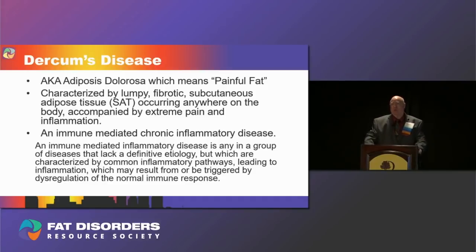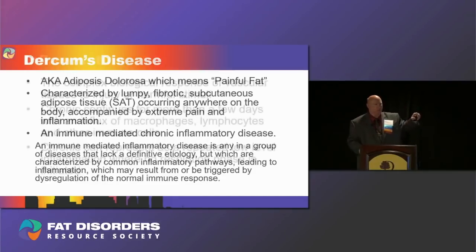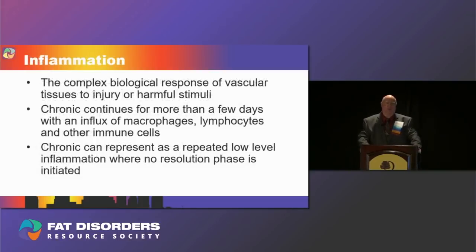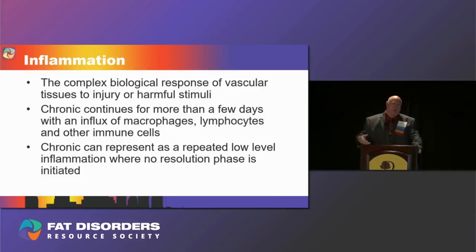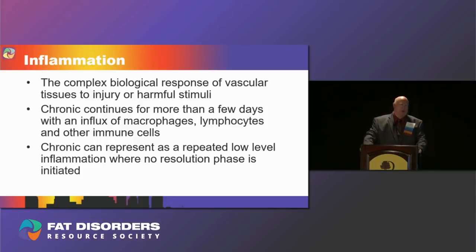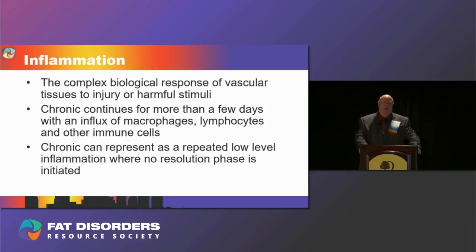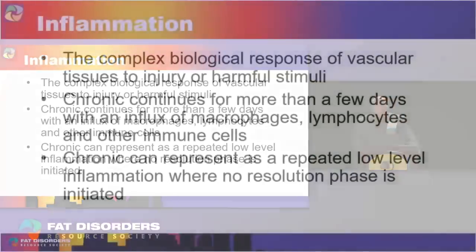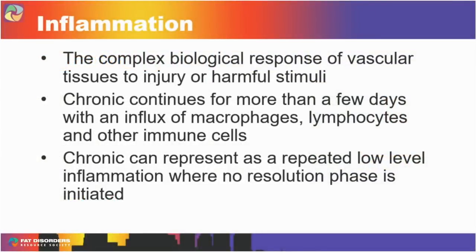These pathways can result from or be triggered by a dysregulation of the normal immune response. Inflammation is a complex biological response of vascular tissues to injury or harmful stimuli — it can be normal, but it can also be pathologic, as it is in chronic inflammatory disease. When inflammation continues chronically, it is characterized in the affected tissues by an influx of macrophages, lymphocytes, and other immune cells.